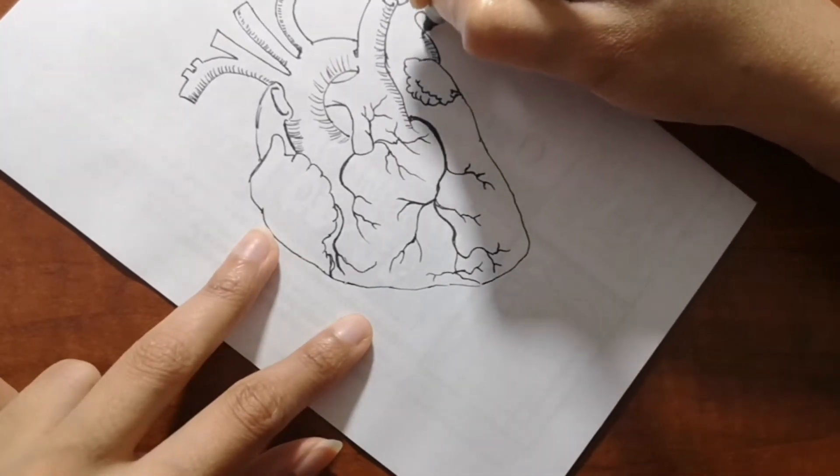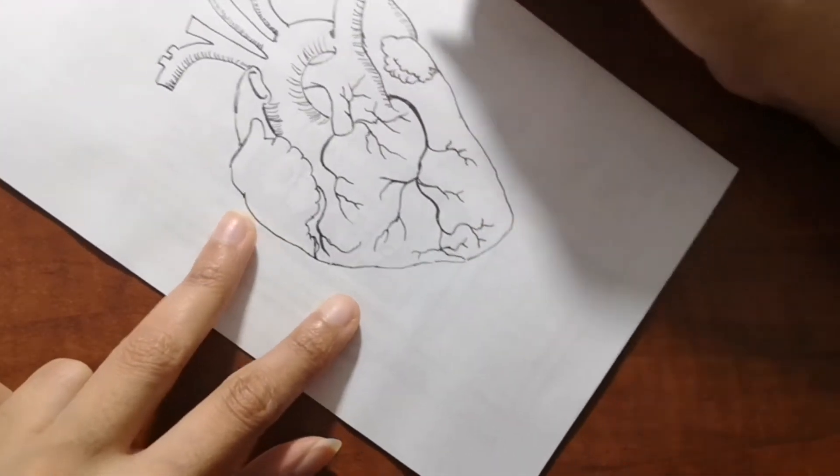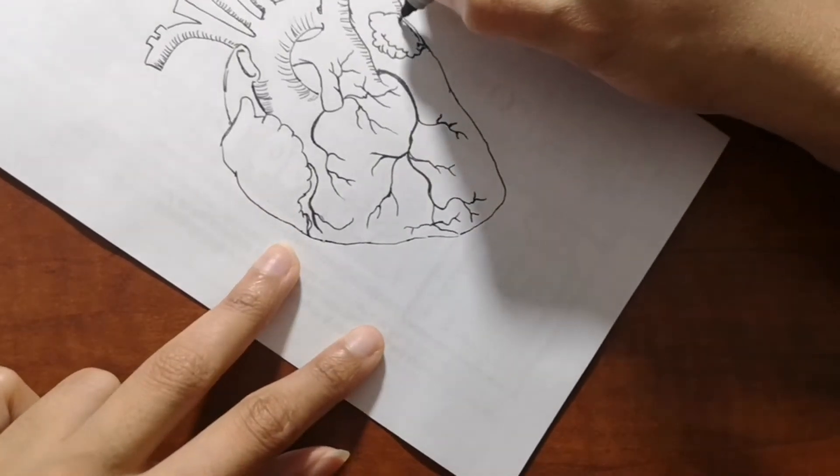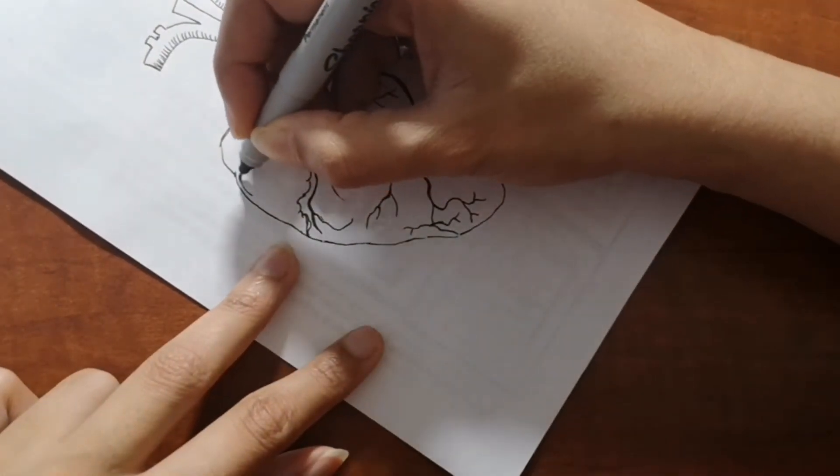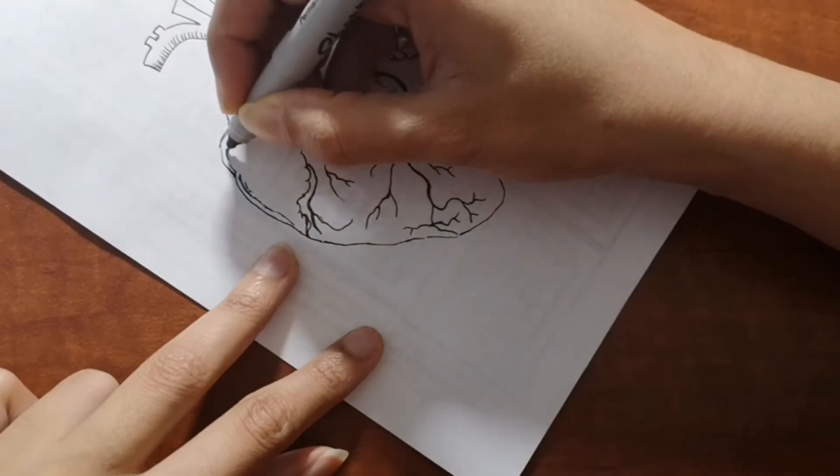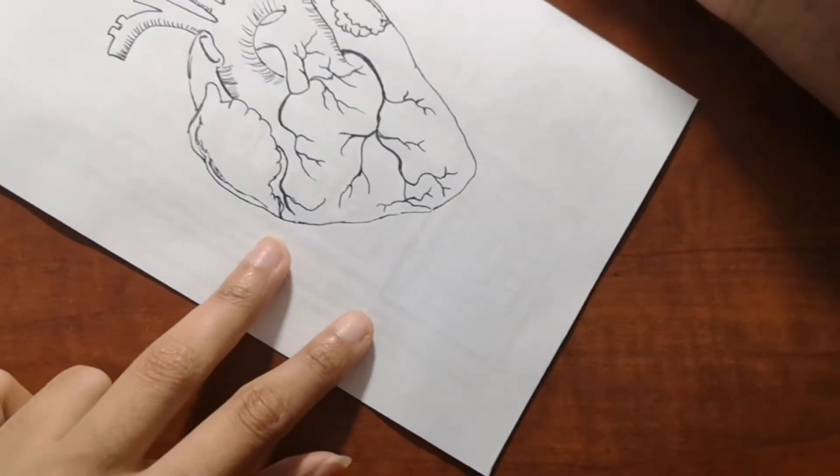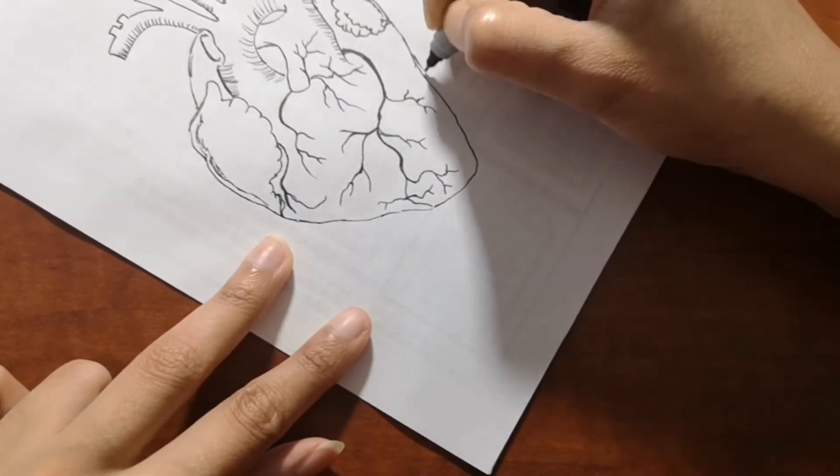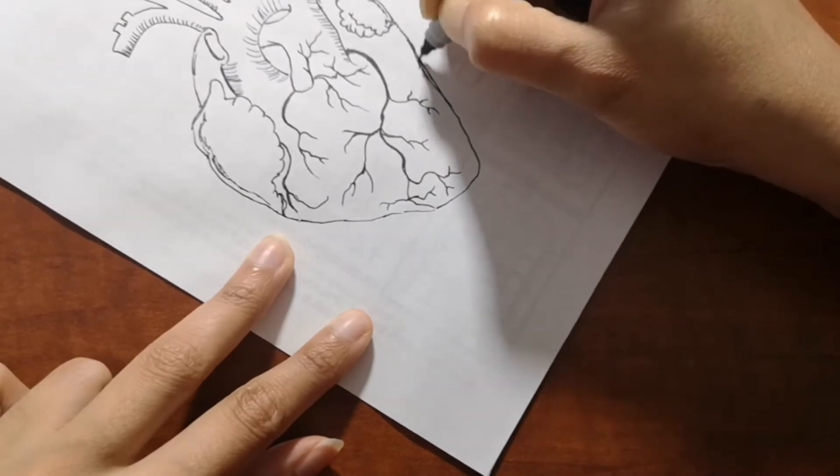The smallest heart of any living creature is of the fairy fly, which is a kind of wasp. And whales have the largest heart of any mammal.